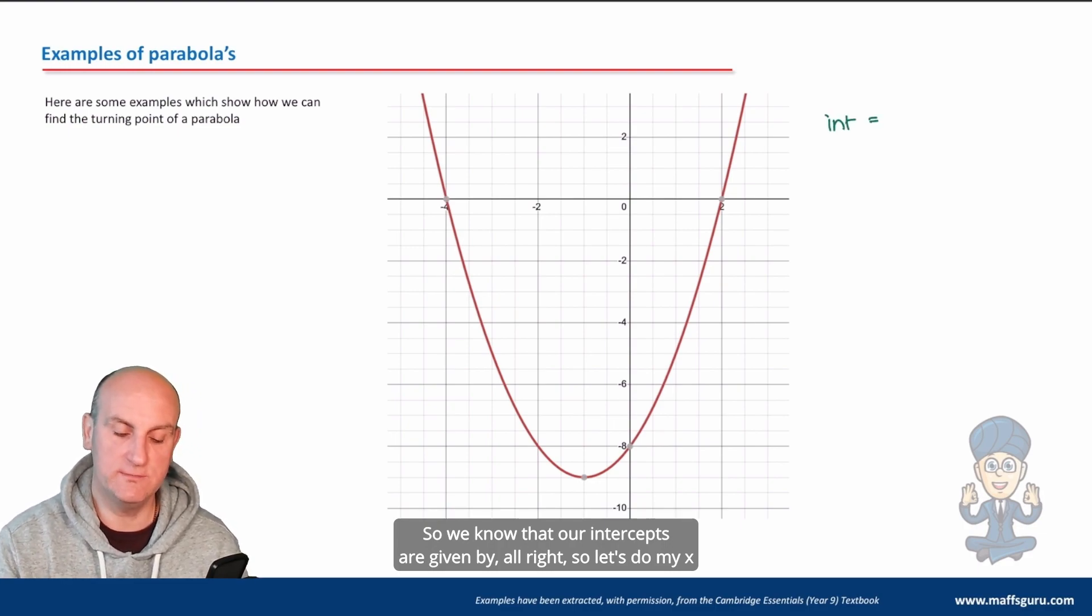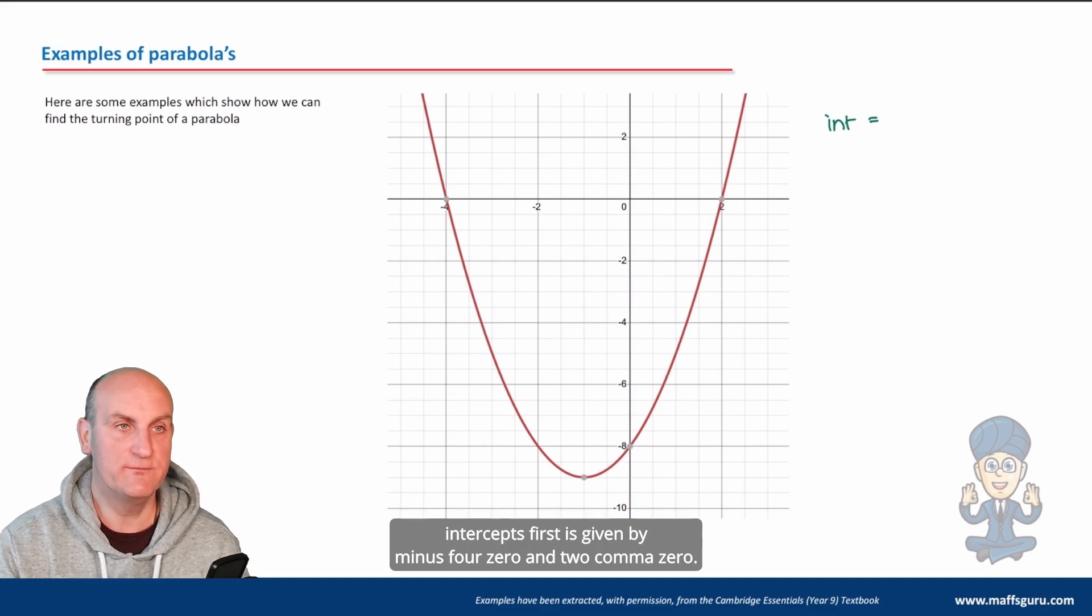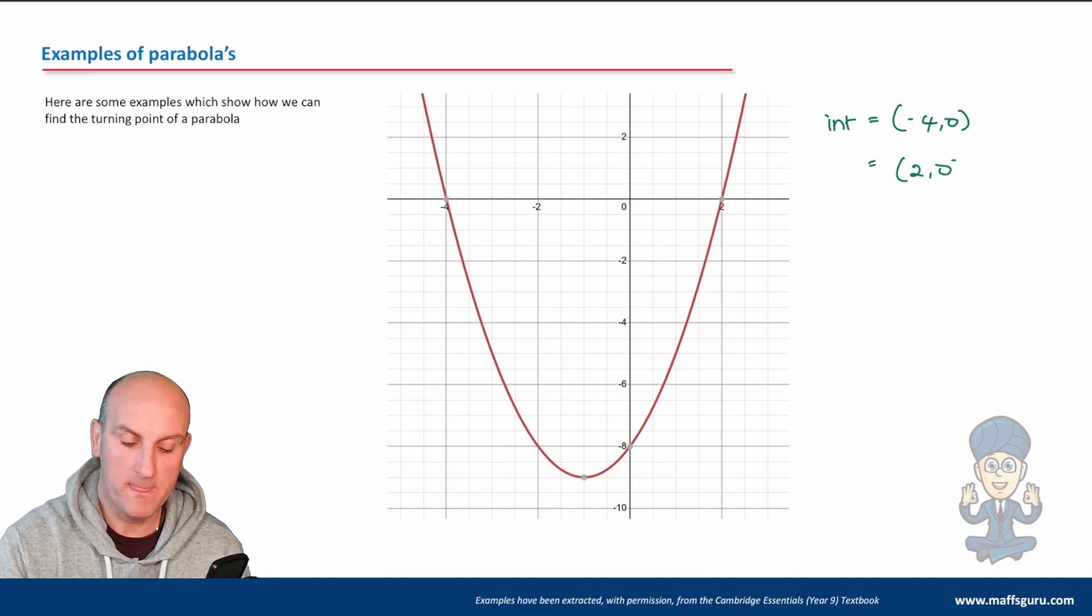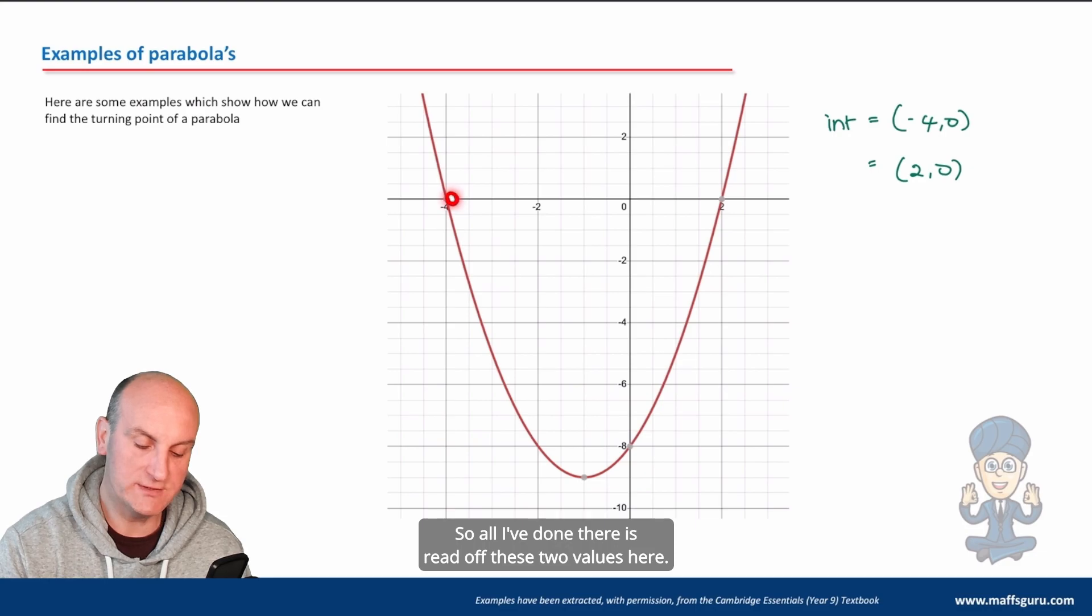We know that our x intercepts are given by minus four, zero and two, zero. All I've done there is read off these two values here.